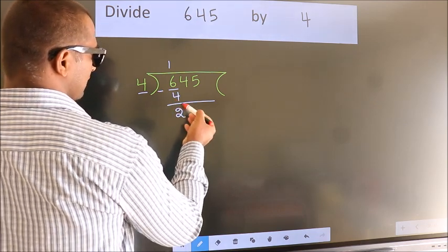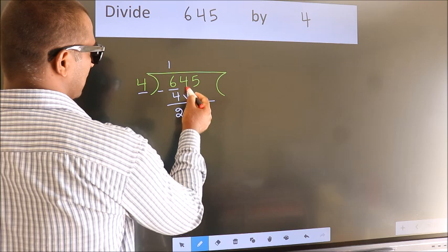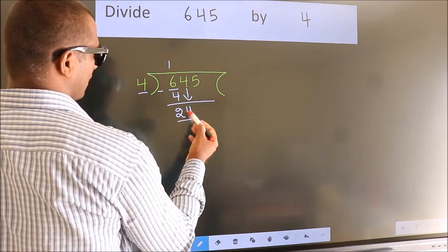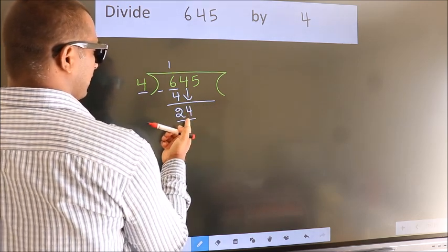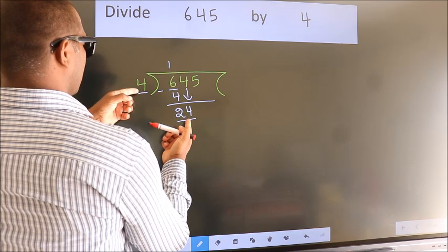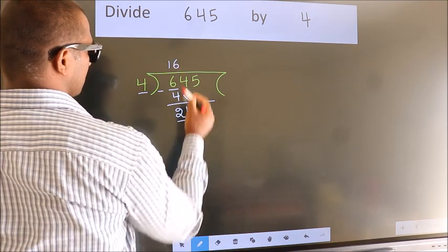After this, bring down the beside number. So, 4 down. So, 24. When do we get 24? In 4 table. 4, 6, 24.